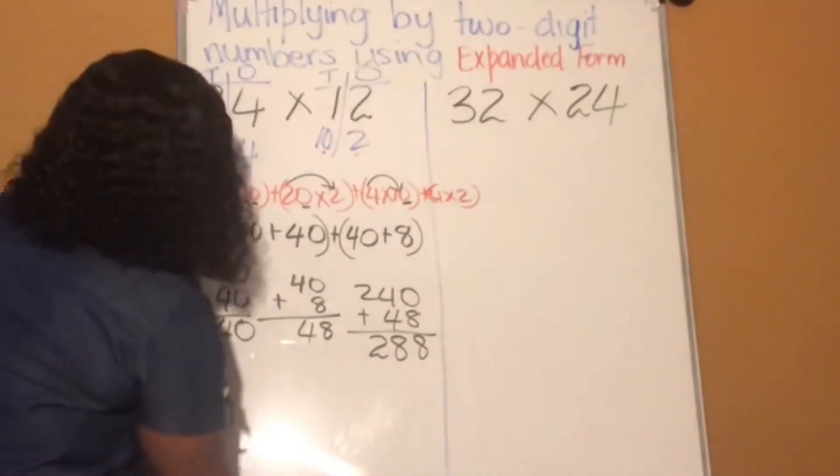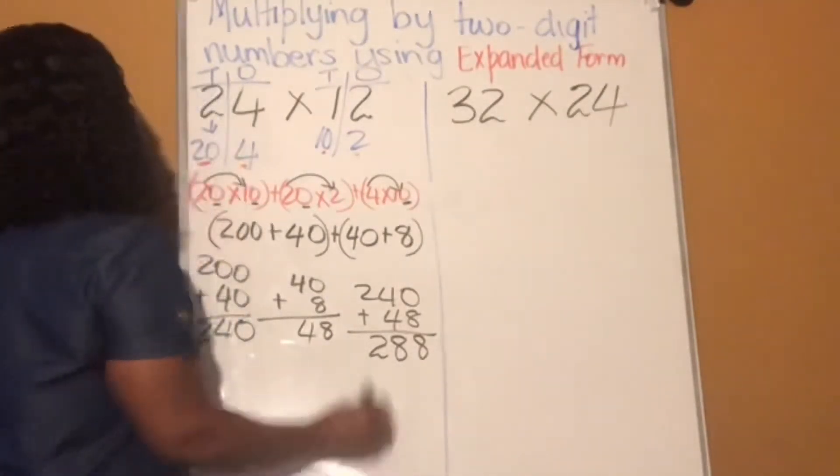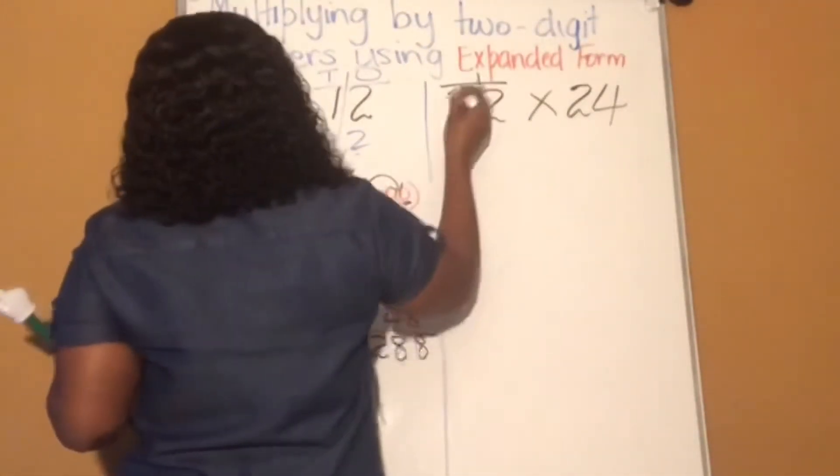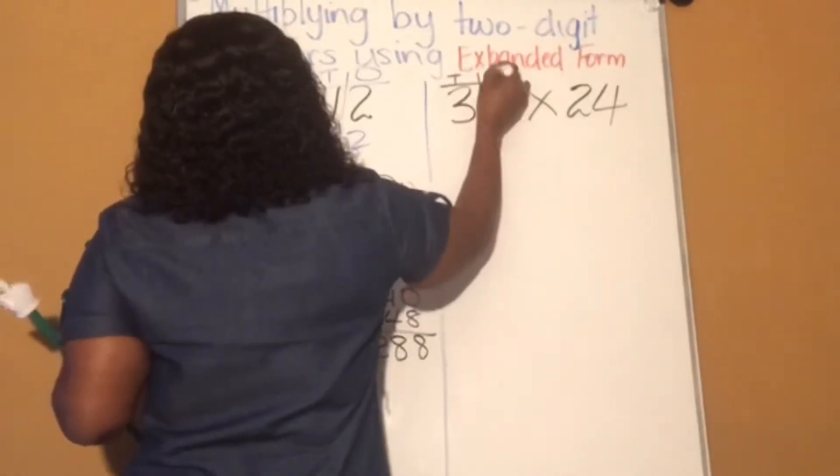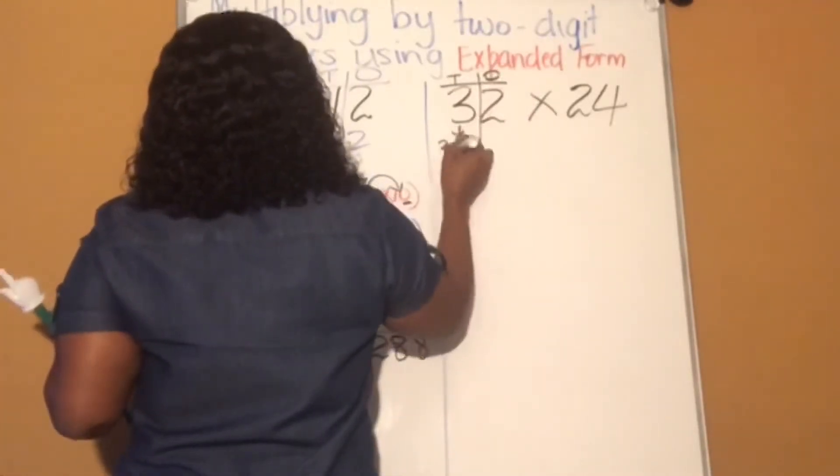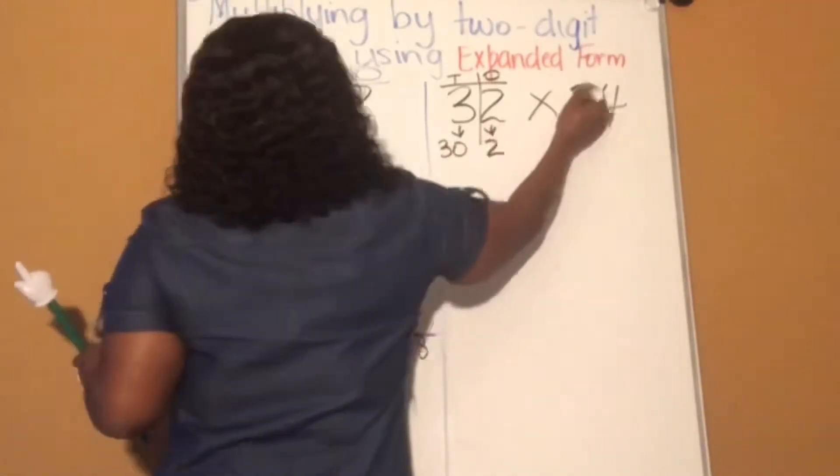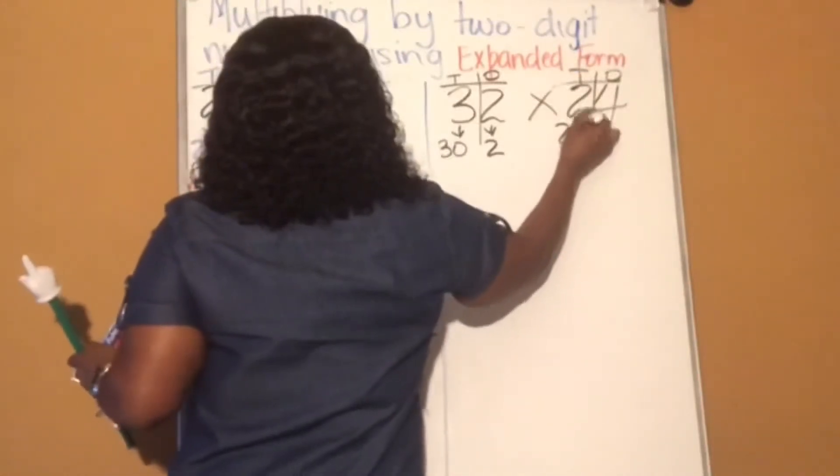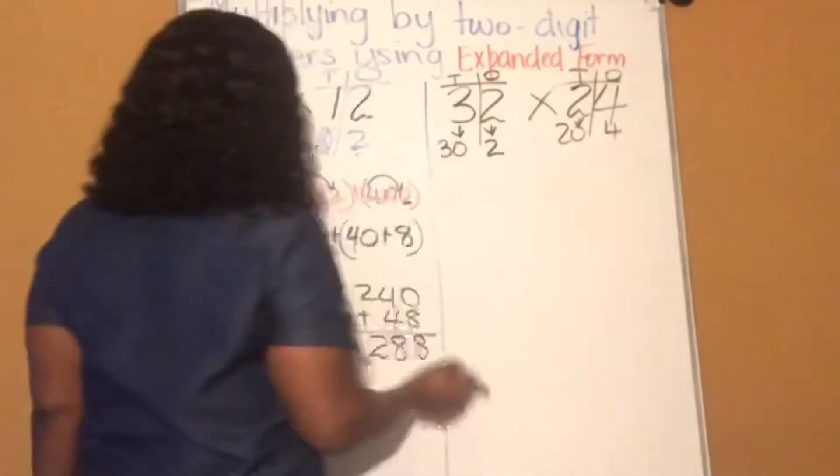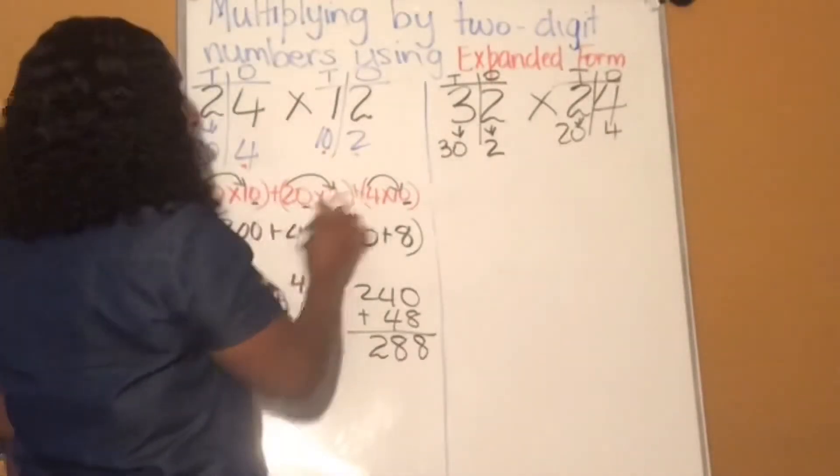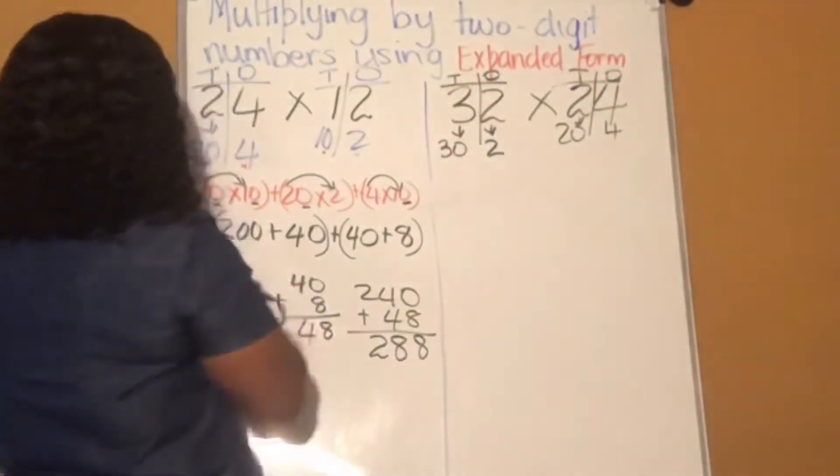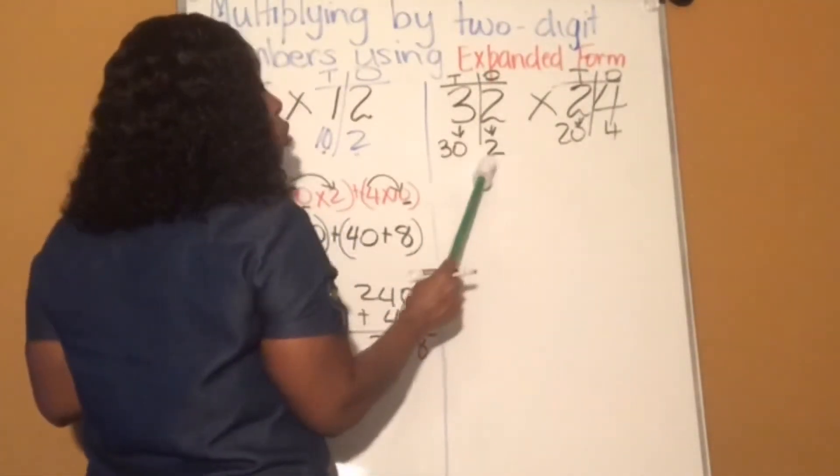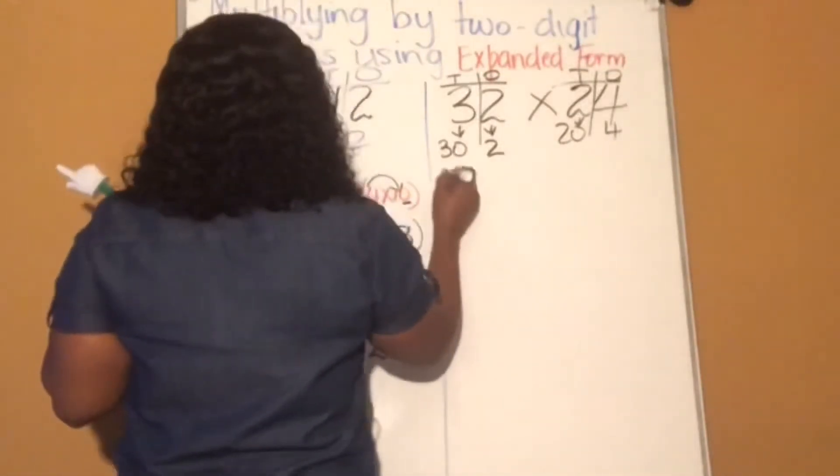Moving on to number 2. So here we have 32 times 24. We have to draw our place value chart. So 3 tens and 2 ones. So that's 3 tens, 30. 2 ones, 2. This is 2 tens and 4 ones, 2 tens, 20, and 4 ones, 4. Now we're going to write them based on how we're going to multiply. Remember, the 30 will be multiplied by 20 and 4, and the 2 will also be multiplied by 20 and 4. So let's go.